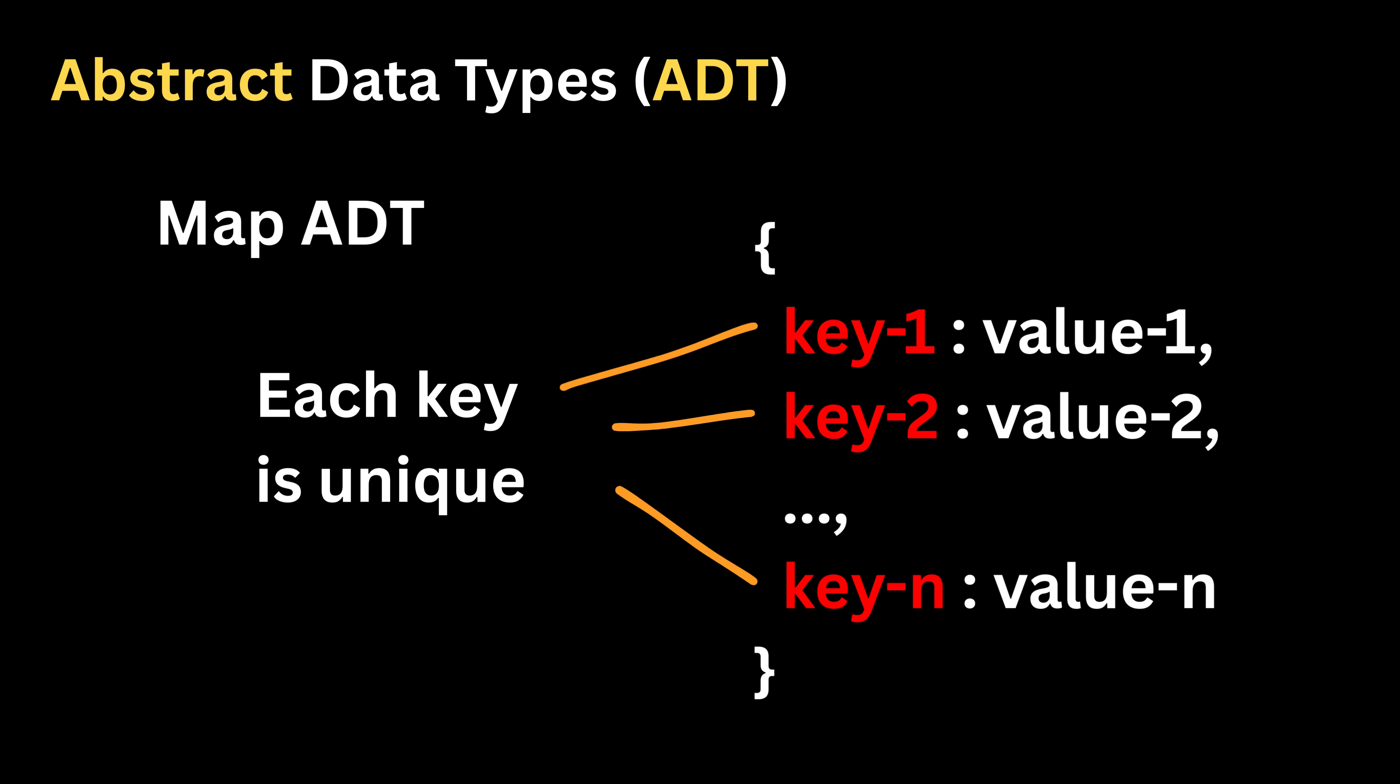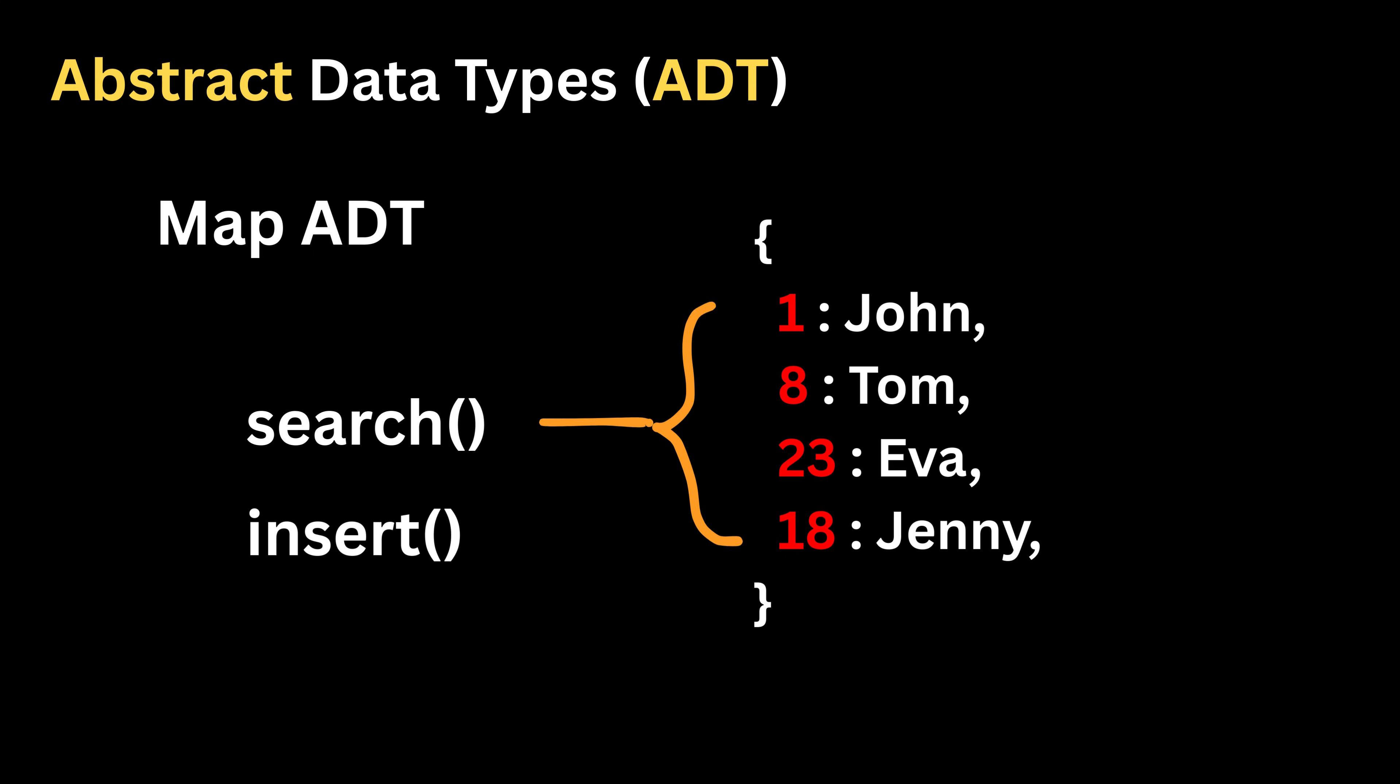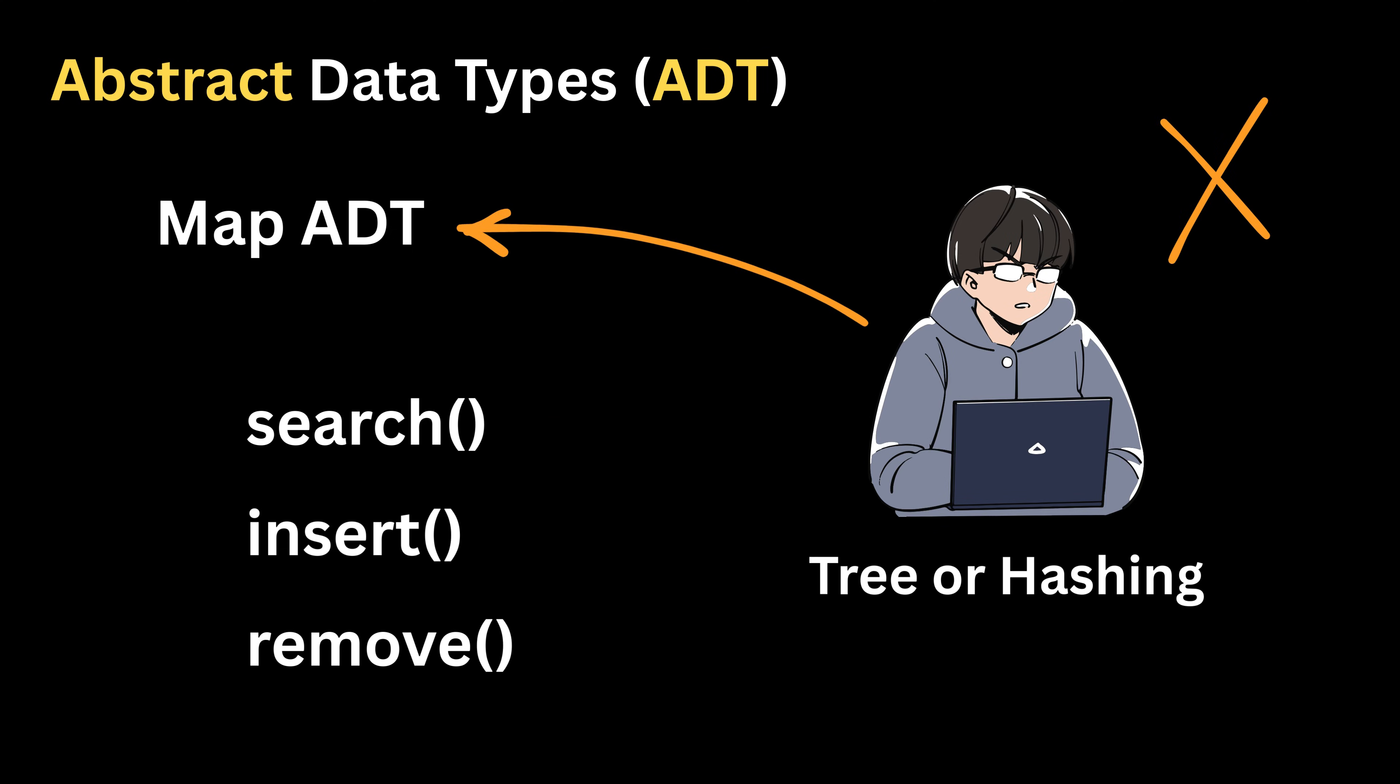Another useful example is a map ADT. A map stores data in key-value pairs, where each key is unique and helps you quickly find its matching value. For example, you can store a student's role number as the key and the student's name as the value. We can insert a new key-value pair, search the value using the key, or remove a pair, but we do not have to worry whether the map is implemented using a tree-like structure or a hashing technique.